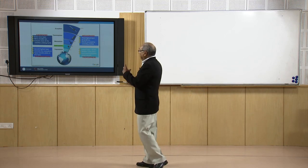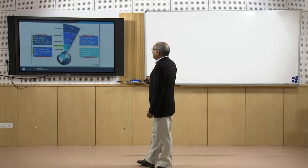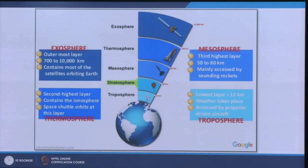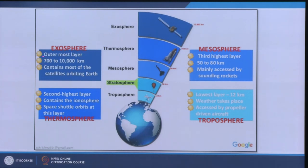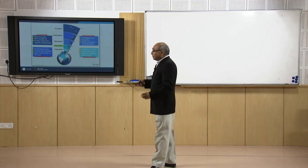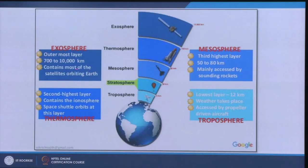Now we come to the different parts of the atmosphere. The top layer is the exosphere where we have our satellites, then the thermosphere where space shuttles generally fly, then mesosphere where rockets operate, and then stratosphere and troposphere. The exosphere is the outermost layer, 700 to 10,000 kilometers thick, and contains most of the orbiting satellites. Earth-orbiting solar polar-orbiting satellites are around 840 plus or minus 10 kilometers, so they are mostly in the exosphere.